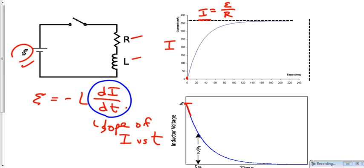So as it flattens out, in other words, the slope is getting smaller, that means the EMF also gets smaller. So that's why here, when we're just about flat, we have just about zero EMF.